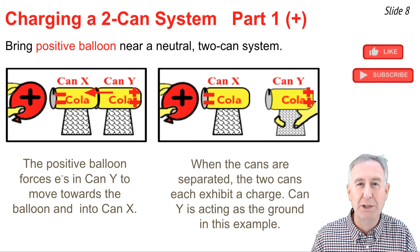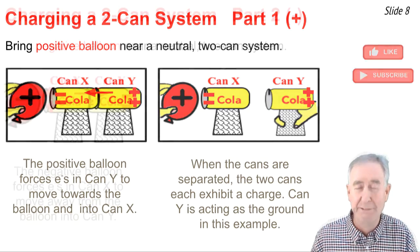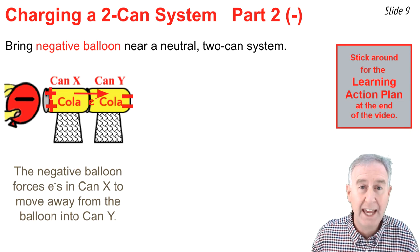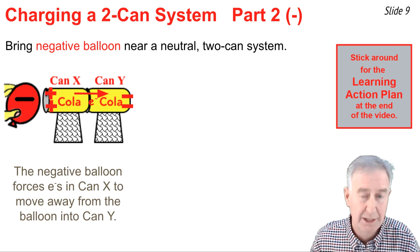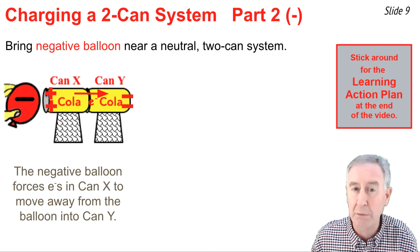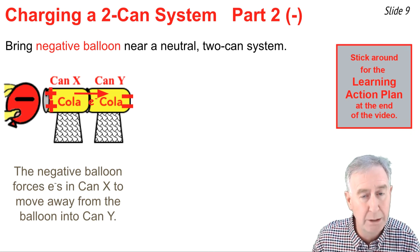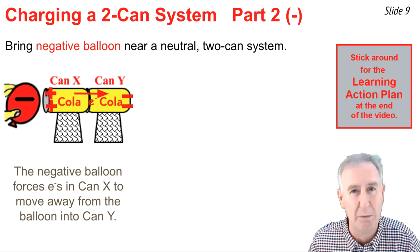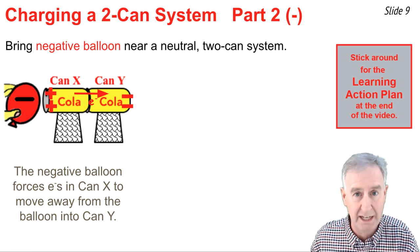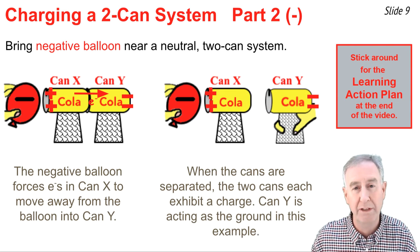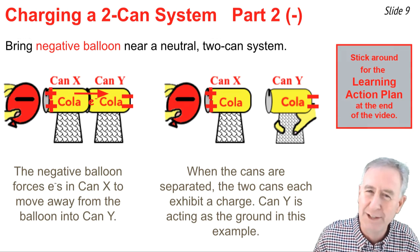With a negatively charged balloon, the situation works a little differently. Electrons in can X sense the presence of the negative balloon and are repelled, so they move out of can X into can Y — that's just the electrostatic principle that like charges repel. That leaves can Y with excess negative charge and can X with excess positive charge. Then the cans are separated, and we observe that can X is positively charged and can Y is negatively charged.